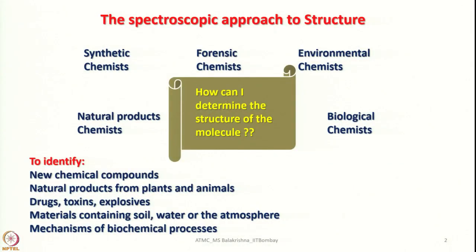For characterization we have to use analytical instruments as well as spectroscopic instruments. Let us start with UV-visible spectroscopy, but before that I shall give a brief introduction to the methods of characterization and spectroscopic methods at our disposal, covering how a spectroscopic approach helps understand the structure of a molecule and its purity.